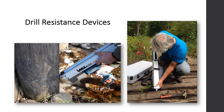Drill resistance devices record the resistance required to drill through a piece of wood. The amount of resistance is related to the density of the wood and can be used to determine if deterioration exists. This method should be used with other inspection tools. The advantage is that the cross section at the drilling location can be very accurately defined, and the procedure is minimally invasive and non-destructive due to the small size of the drill bits.